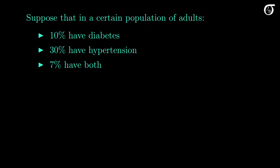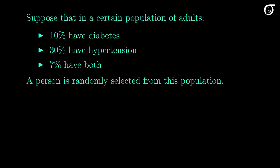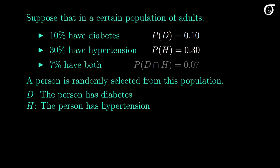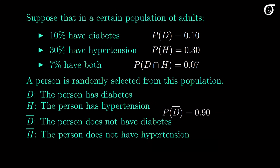Suppose that in a certain population of adults, 10% have diabetes, 30% have high blood pressure (hypertension), and 7% have both. A person is randomly selected from this population. Let event D represent the person having diabetes and event H represent having hypertension. Then the probability of D is 0.1, the probability of H is 0.3, and the probability of their intersection is 0.07. The complement of D — the person does not have diabetes — has probability 1 − 0.1 = 0.9.